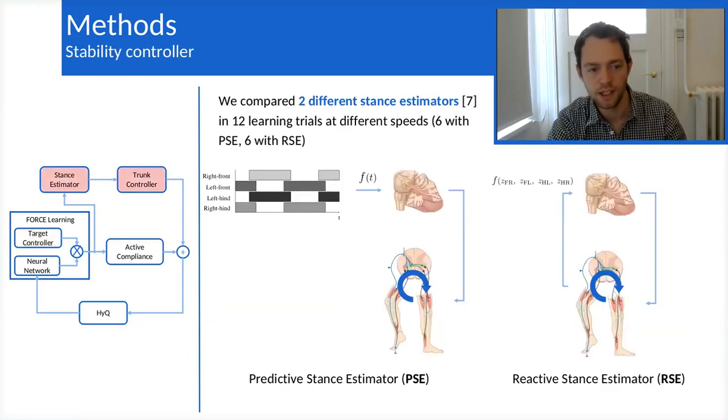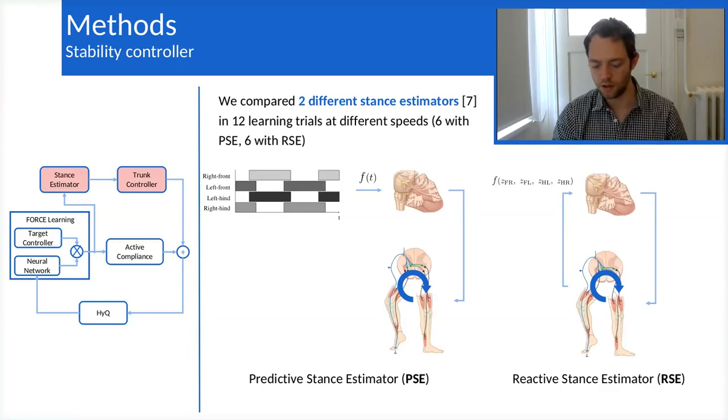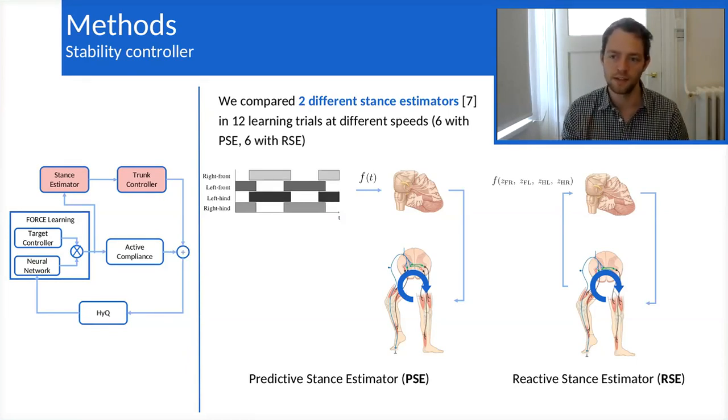And so finally, the most important part here is the trend controller. It helps to stabilize the body by keeping it horizontal to the ground at each moment. But to do that, it needs to know which foot is in contact with the ground to be able to apply torque on those feet and then regulate the attitude of the body.